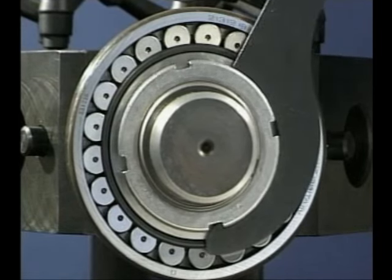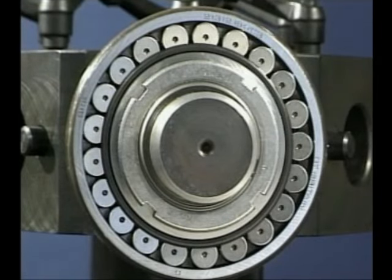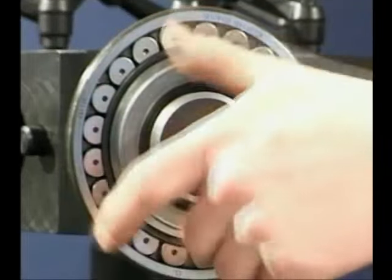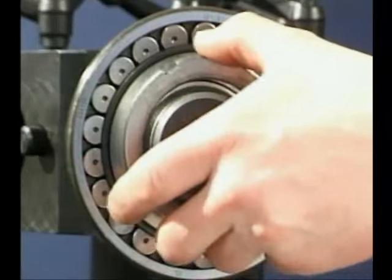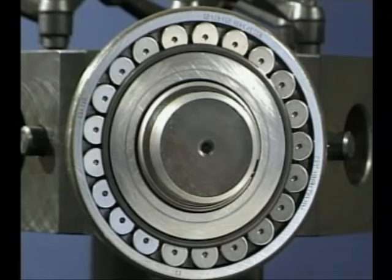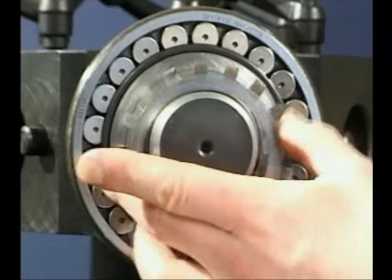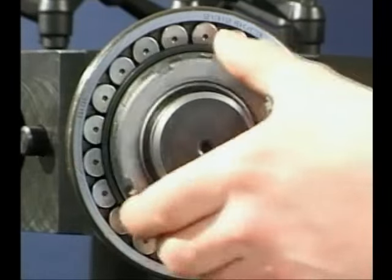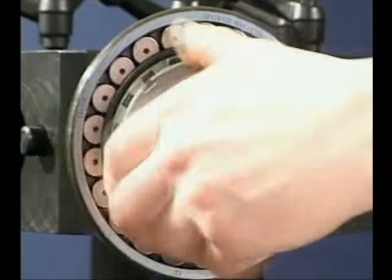After the correct clearance has been obtained, remove the nut. Fit the lock washer and replace the lock nut. By tightening the nut and securing the lock washer tab, the final mounting of the spherical roller bearing is achieved.